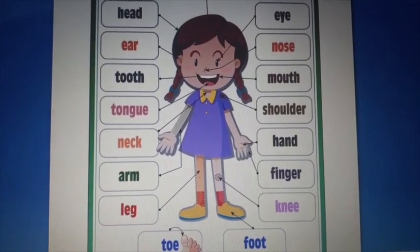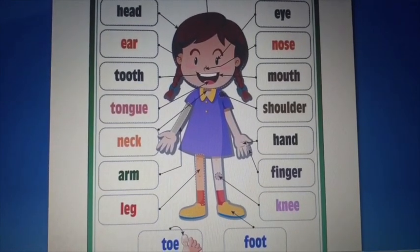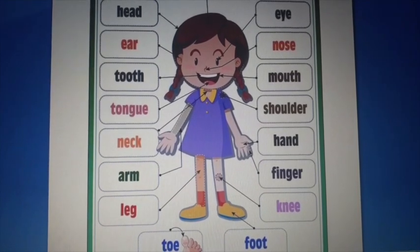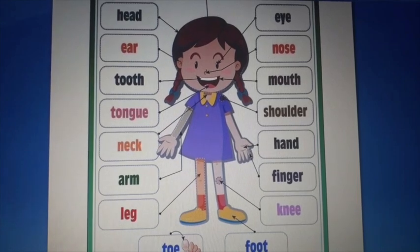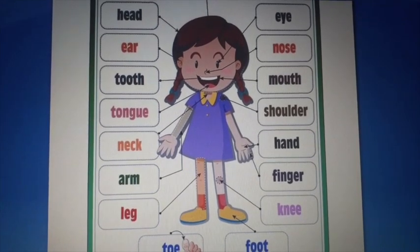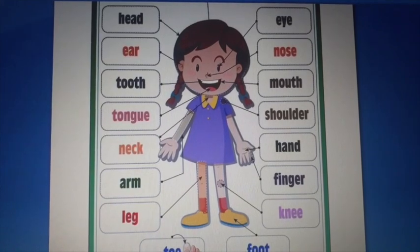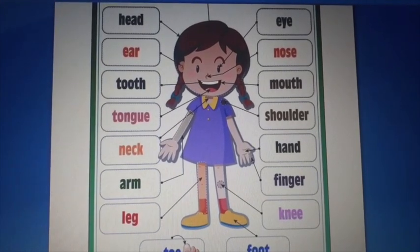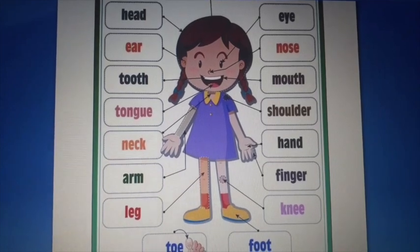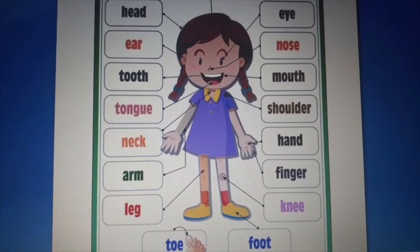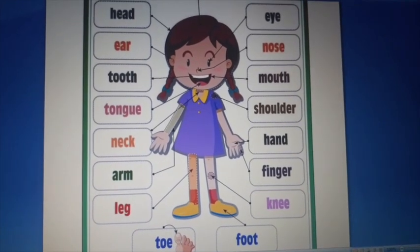Now we will read the names of these organs. First: Head. Second: Eyes. Third: Ear. Fourth: Nose. Fifth: Mouth. Sixth: Tooth. Seven: Tongue. Eight: Neck. Nine: Shoulder. Ten: Hand. Eleven: Arm. Thirteen: Leg. Fourteen: Knee. Fifteen: Toe. Sixteen: Foot.